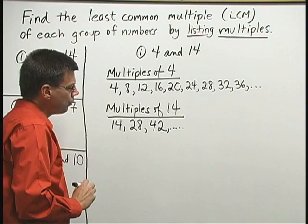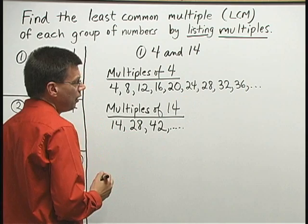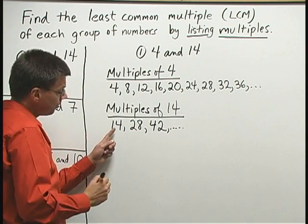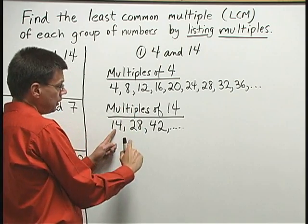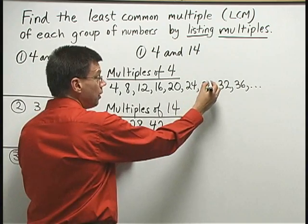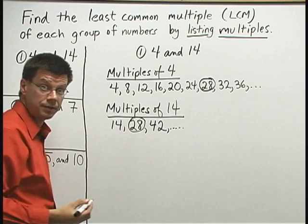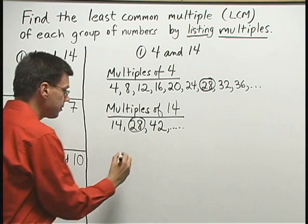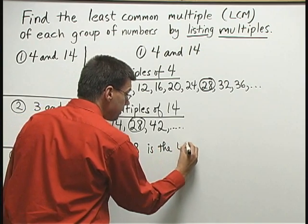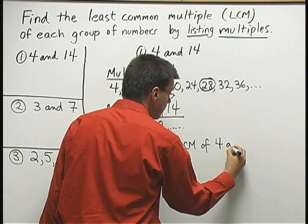What we're trying to find is the smallest common multiple of both of those numbers. The smallest number that's on both lists. Now, 14 is below. 14 is not above. 28 is below. 28 is above also. 28 is the smallest number that's on both lists. So I know that 28 is the LCM of 4 and 14.